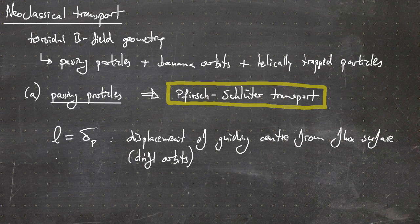To be precise, L is the step size in the random walk description. We needed two quantities for the diffusion coefficient based on the random walk approach: the step size and the stepping time. We distinguish two cases for the stepping time.